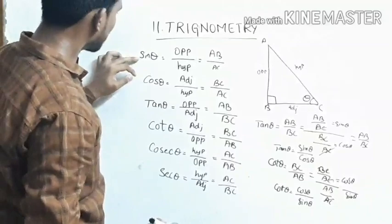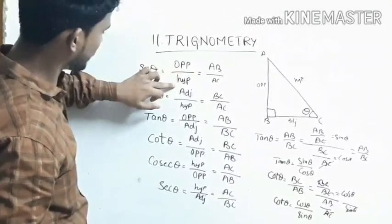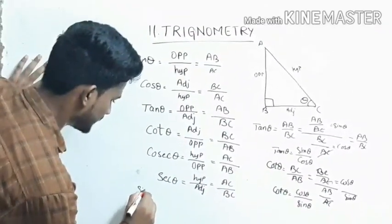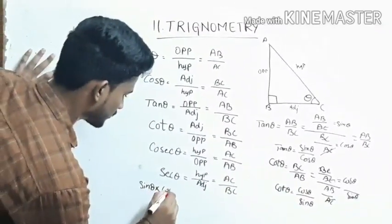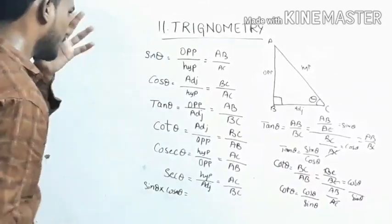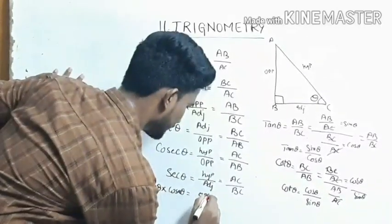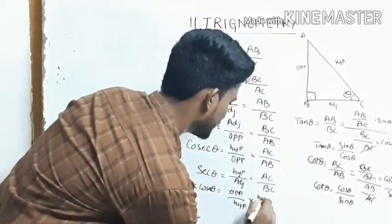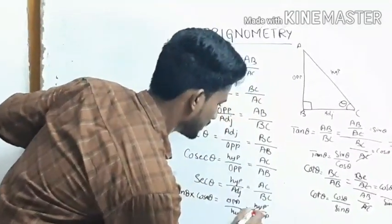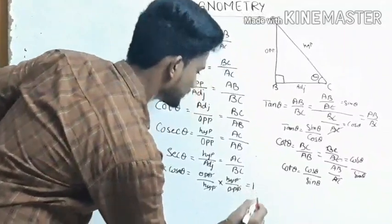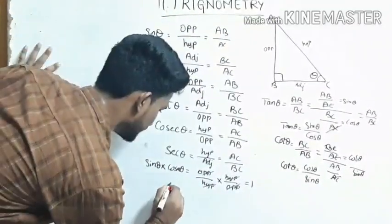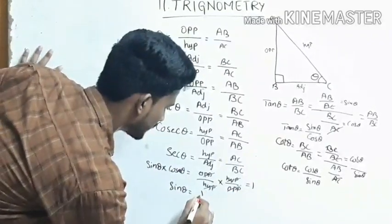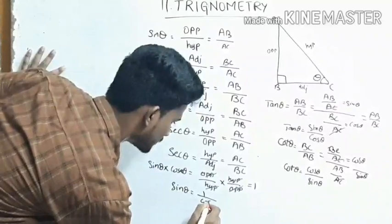Sin theta equals to opposite by hypotenuse, and cosecant theta equals to hypotenuse by opposite. So sin theta into cosecant theta equals opposite by hypotenuse into hypotenuse by opposite. Hypotenuse and opposite both cancel, giving 1. Therefore sin theta equals 1 by cosecant theta.